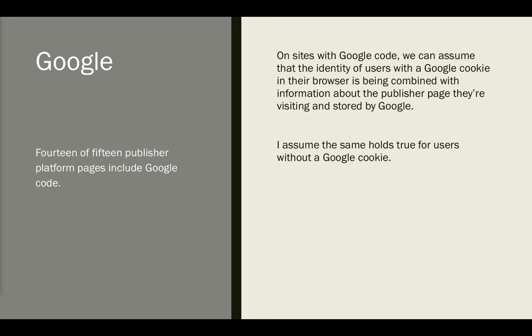Google: 14 of the 15 publisher platforms included Google code. Likewise, we can assume that on sites with Google code, if you have a live Google cookie in your browser, your identity is going to be combined with the information about the page that you're visiting and stored by Google. I assume the same holds true for users without a Google cookie.